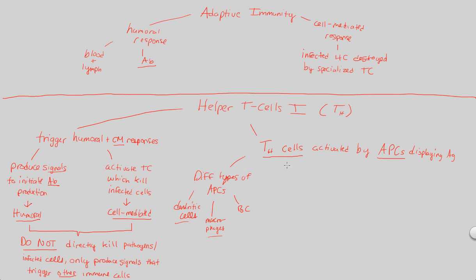When helper T cells notice the antigens presented on the surface of these APCs, they become activated and then go tell B cells and other T cells what's happening. The APC essentially says: this antigen has just been consumed. Overall, what we state about the activation of helper T cells is the following.